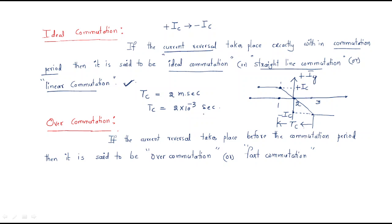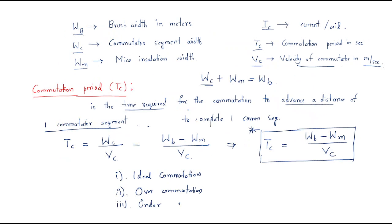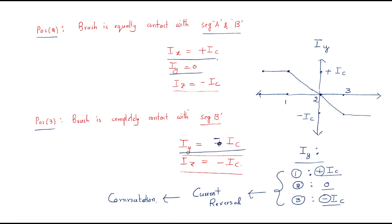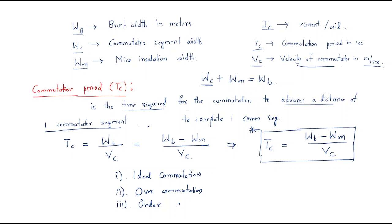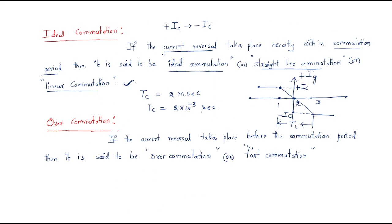This covers the commutation period and ideal commutation. The remaining two types of commutation — over commutation and under commutation — will be discussed in the next class. I hope all of you understood this session. Thank you.